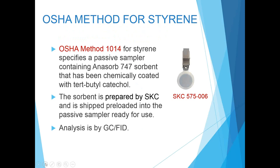Similar to chemically coated sorbents in tubes, we are starting to see passive samplers that use chemically coated sorbents for unique compounds. Chemically coated sorbent for styrene is one example — the sorbent is Anasorb 747 chemically coated with tert-butyl catechol. This is the SKC 575-006. This badge is ready for use; SKC chemically coats the sorbent and all you have to do is put the sampler in the test area as usual.